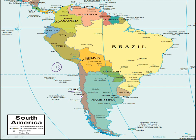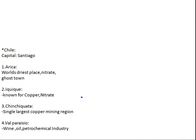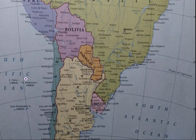We'll go to the first country, that is Chile, with the capital Santiago. The important city in Chile is Arica. It is the world's driest place and has major deposits of nitrate due to its dry climate. It is also known as a ghost town due to the less habitation in that city. We'll see it on the map — that is Arica.